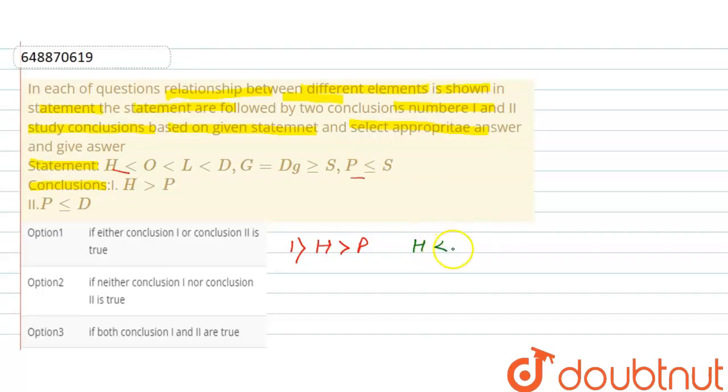H smaller than O K, and O here is L K. L here is D K, and D here is equal to G. And G here is greater than equal to S K, and S here is greater than equal to P K.